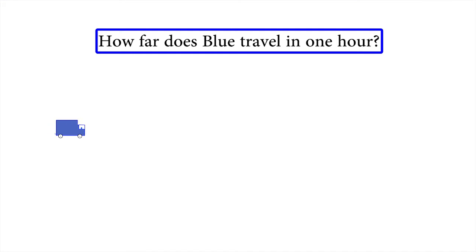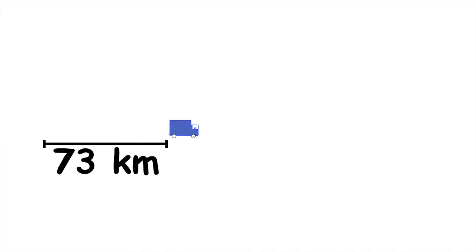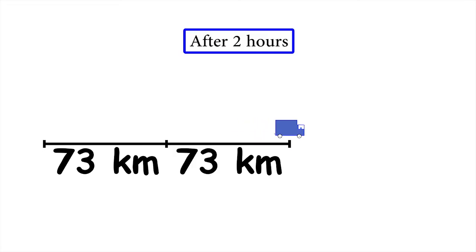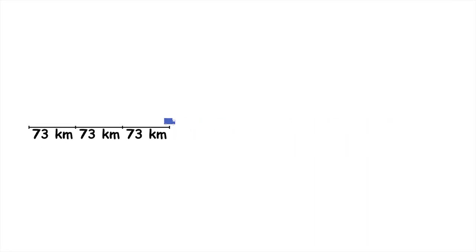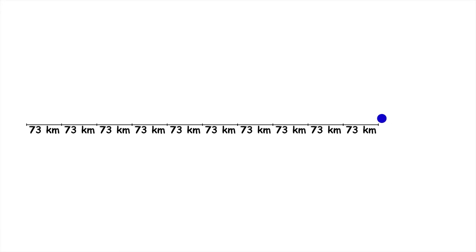If Blue travels at 73 kilometres an hour, in one hour he covers a distance of 73 kilometres. But then he travels another hour, so we have to add another 73 kilometres. Then another hour, and another 73 kilometres. We have to repeat this process 12 times, because that's the number of hours he spends travelling.